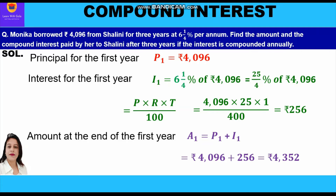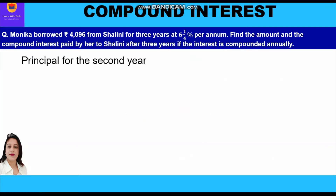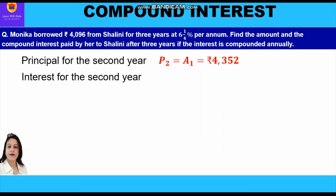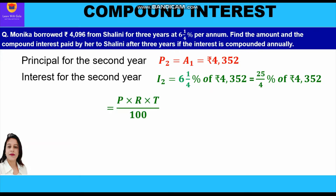Now we shall move to the principal of the second year. The amount calculated in the first year, that is 4352, becomes the principal of the second year. The interest for the second year shall be calculated at the rate of 6¼ percent of 4352. Applying the simple interest formula for one year: PRT upon 100 equals 4352 into 25 into 1 upon 400, which gives us rupees 272 as the interest for the second year.